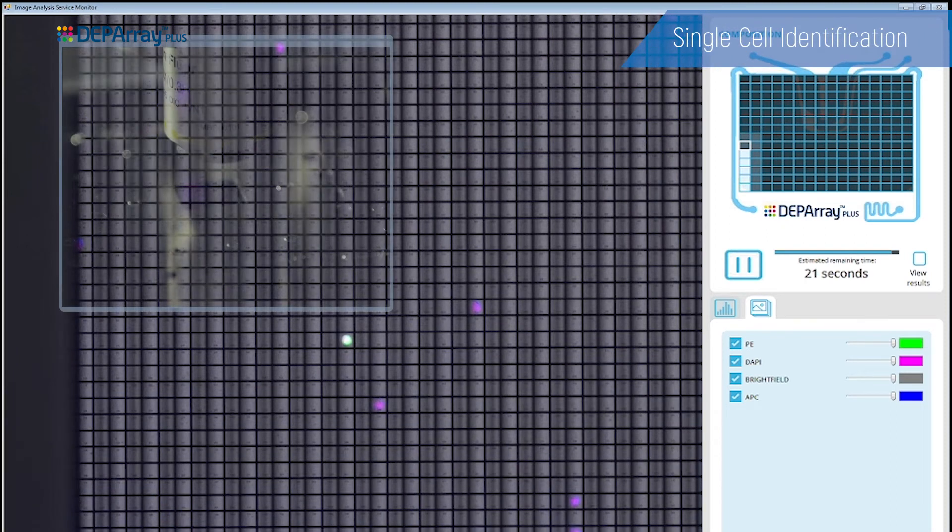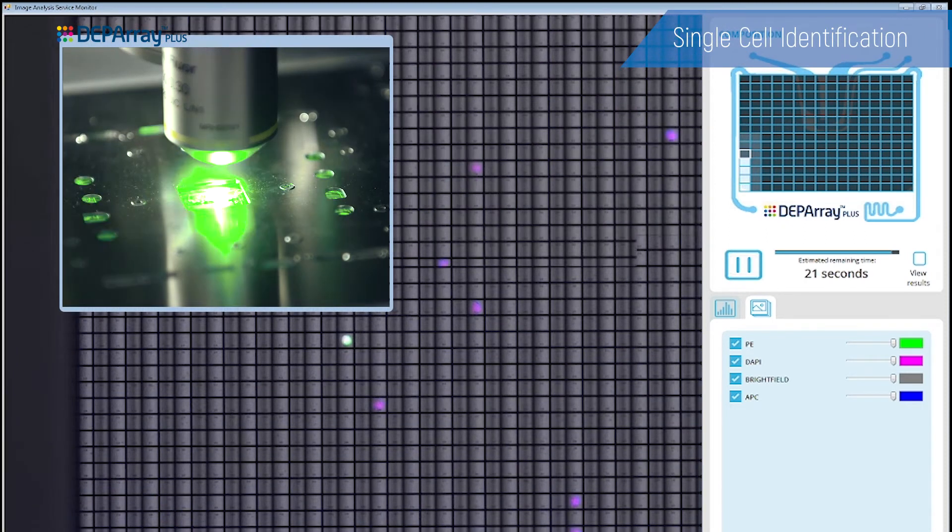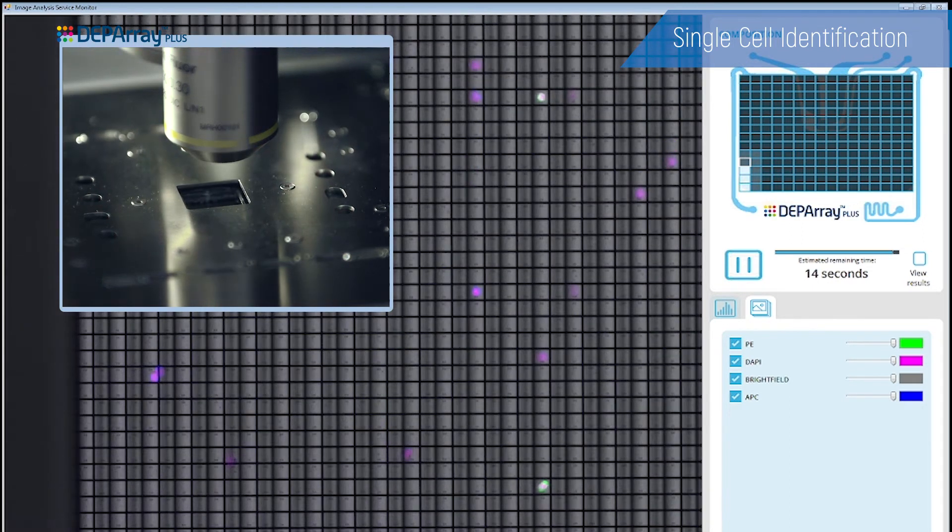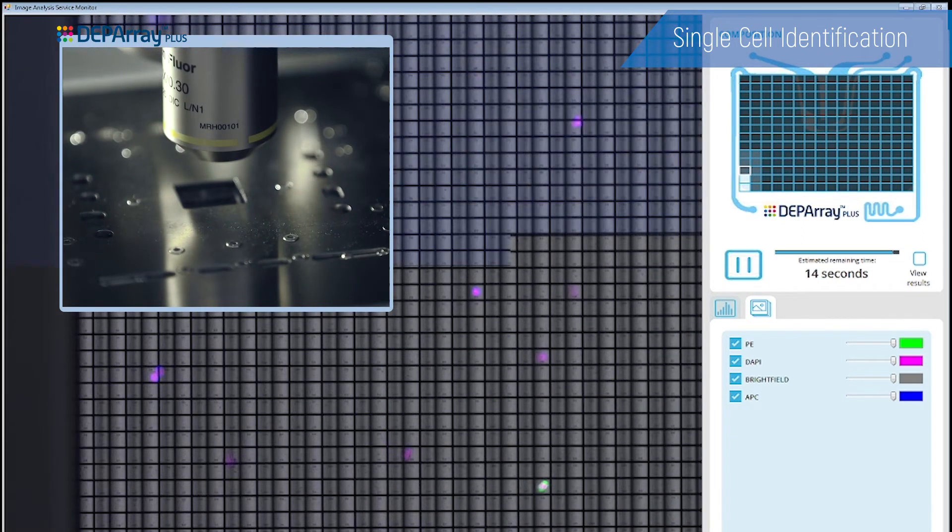Once cells are trapped in DEP cages, single cells are identified and selected based on their fluorescent markers, thanks to a 9-channel fluorescent microscope and a high-resolution imaging camera.